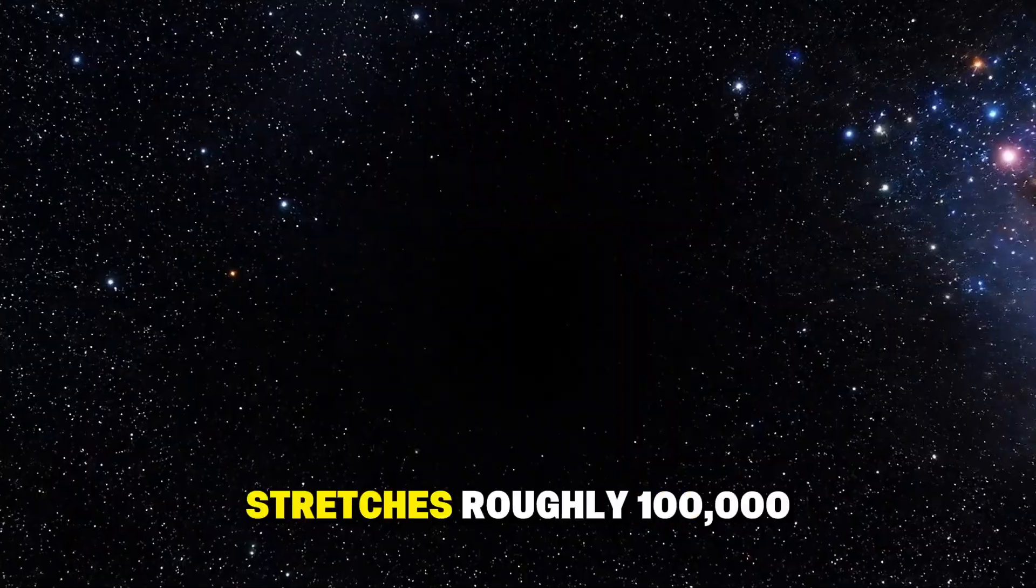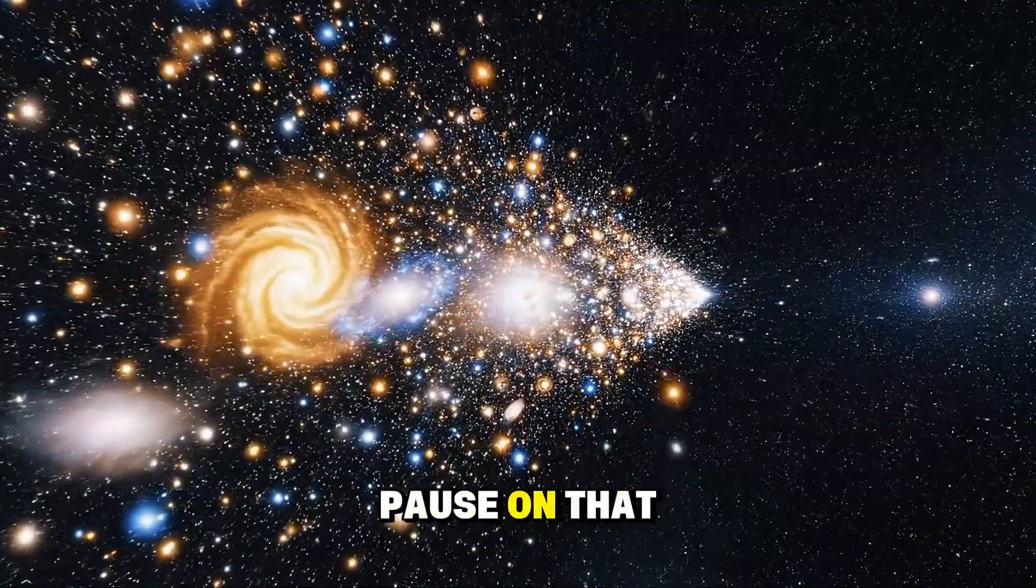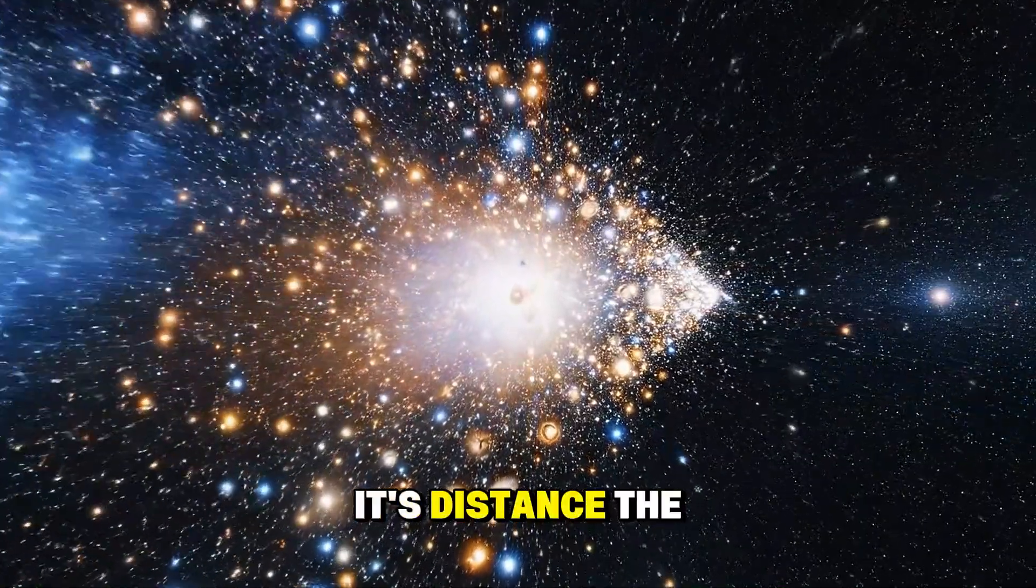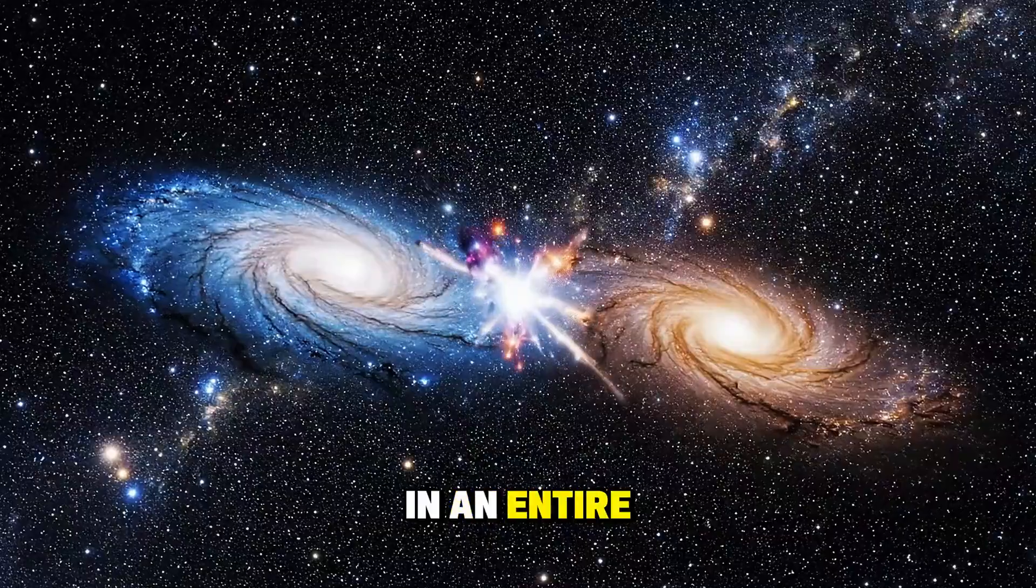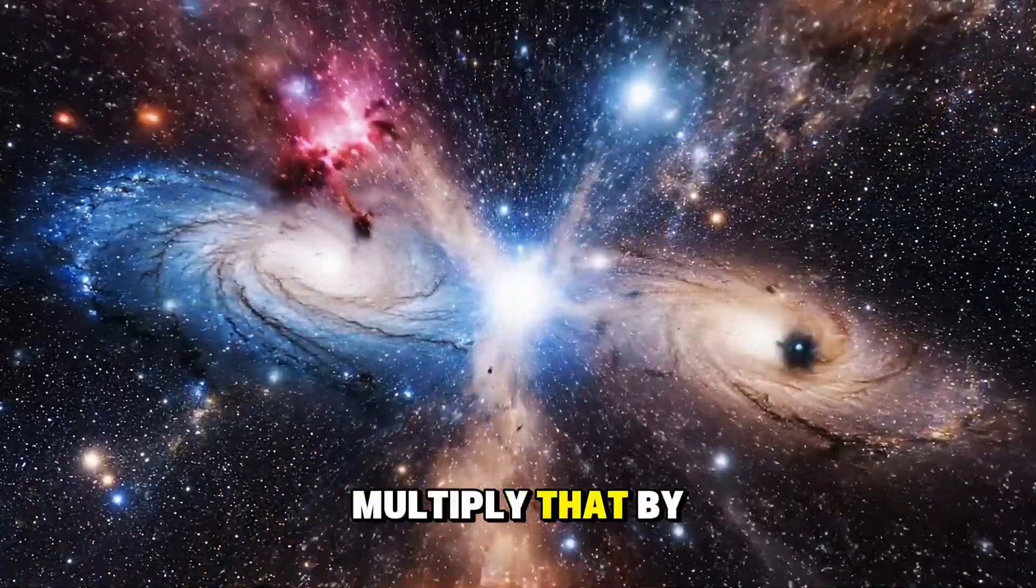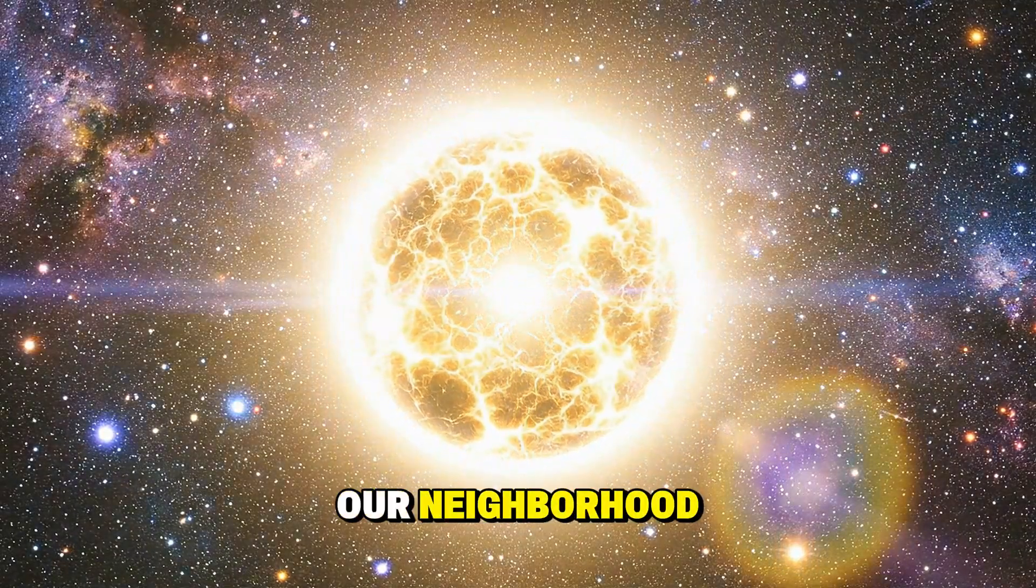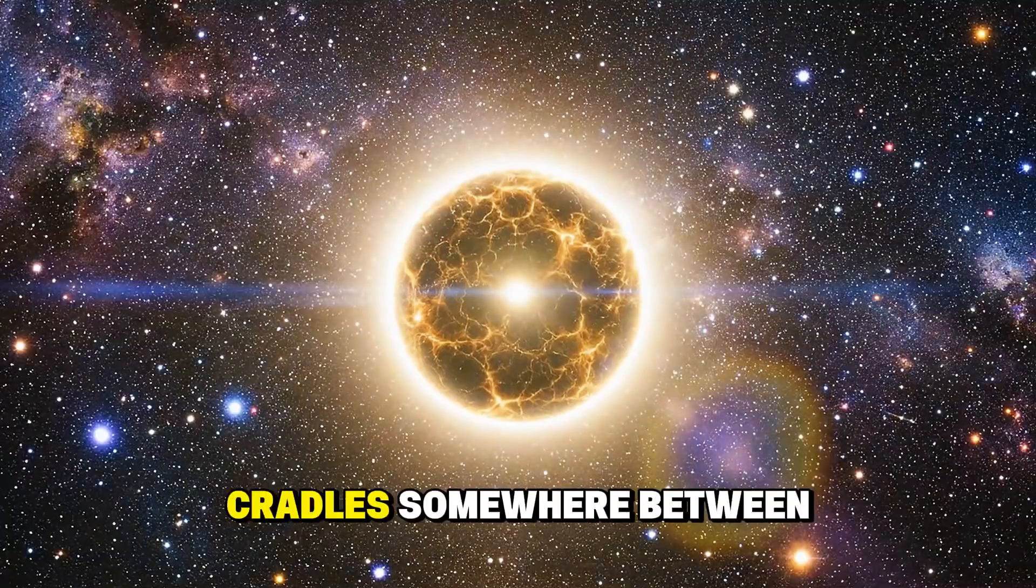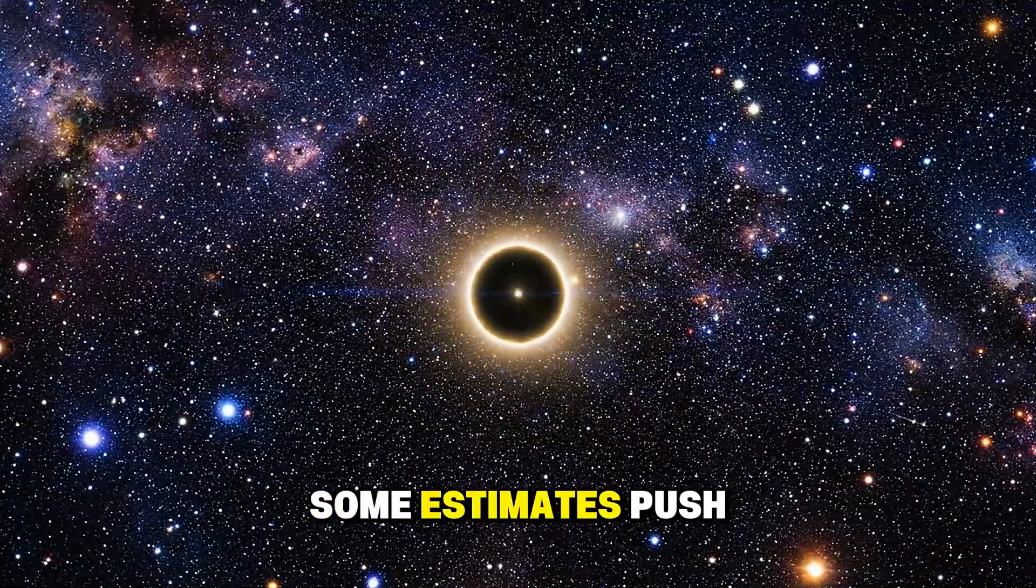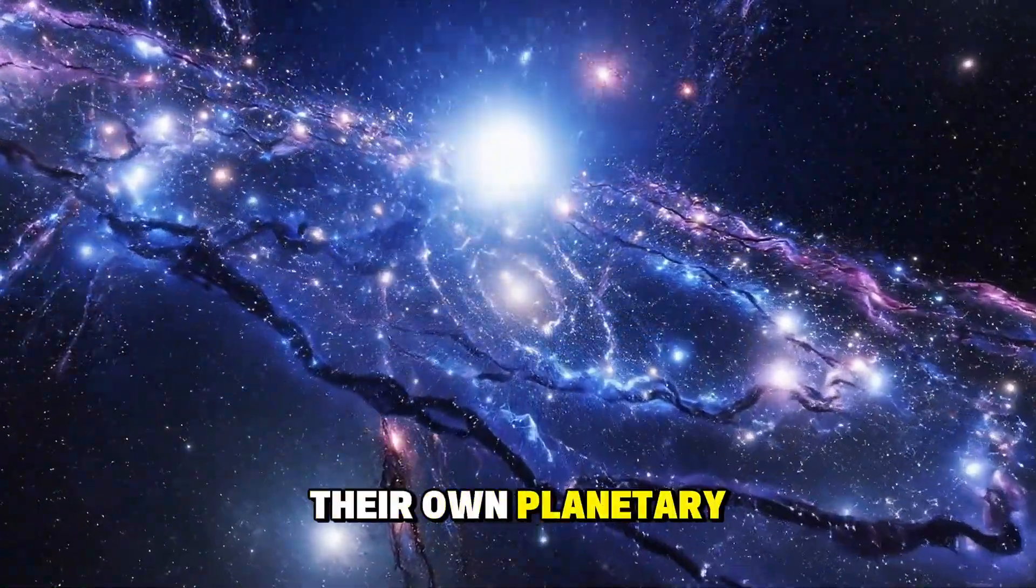Our galactic home stretches roughly 100,000 light years from edge to edge. Now pause on that for a moment. A light year isn't a measure of time, it's distance. The distance light travels in an entire year. That's nearly 6 trillion miles. Multiply that by 100,000, and you begin to grasp the scale of just our neighborhood. The Milky Way cradles somewhere between 200 and 400 billion stars. Some estimates push even higher. Each one a sun, many with their own planetary systems.